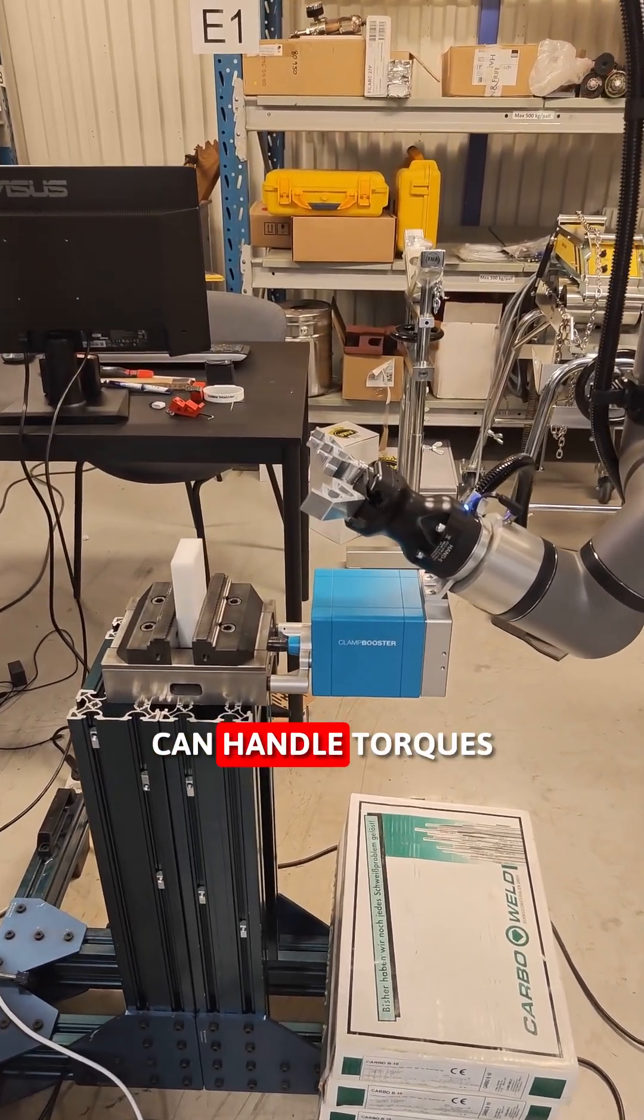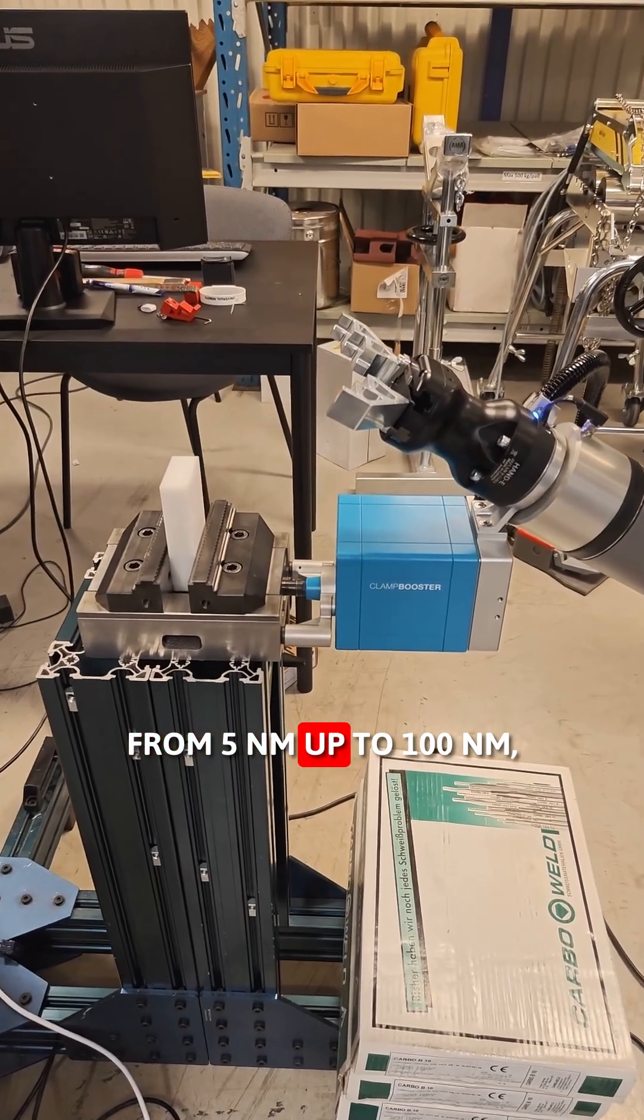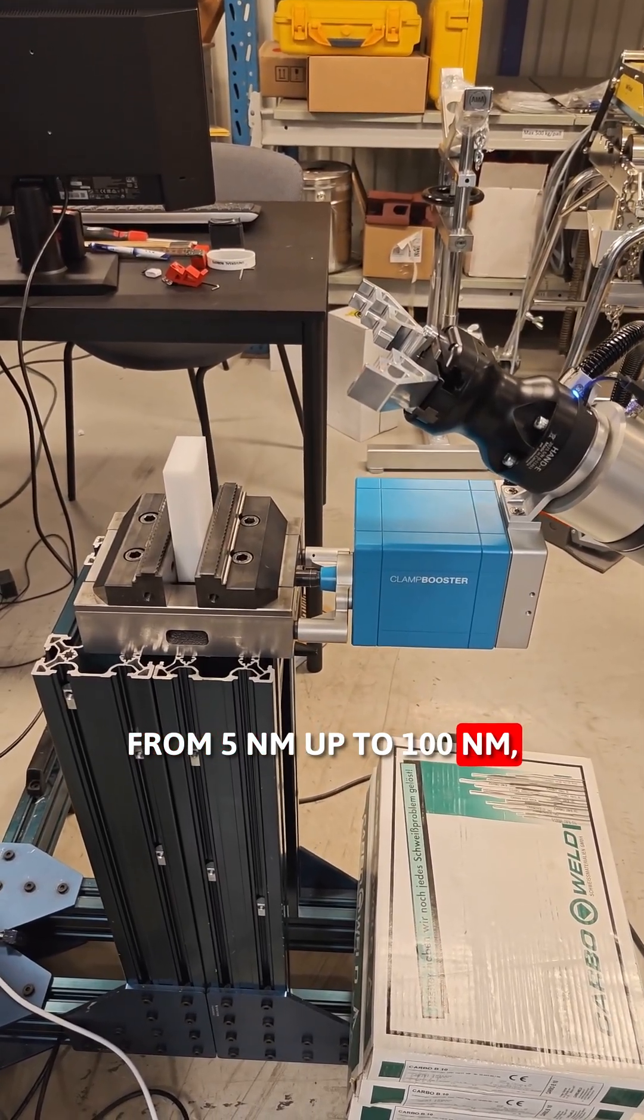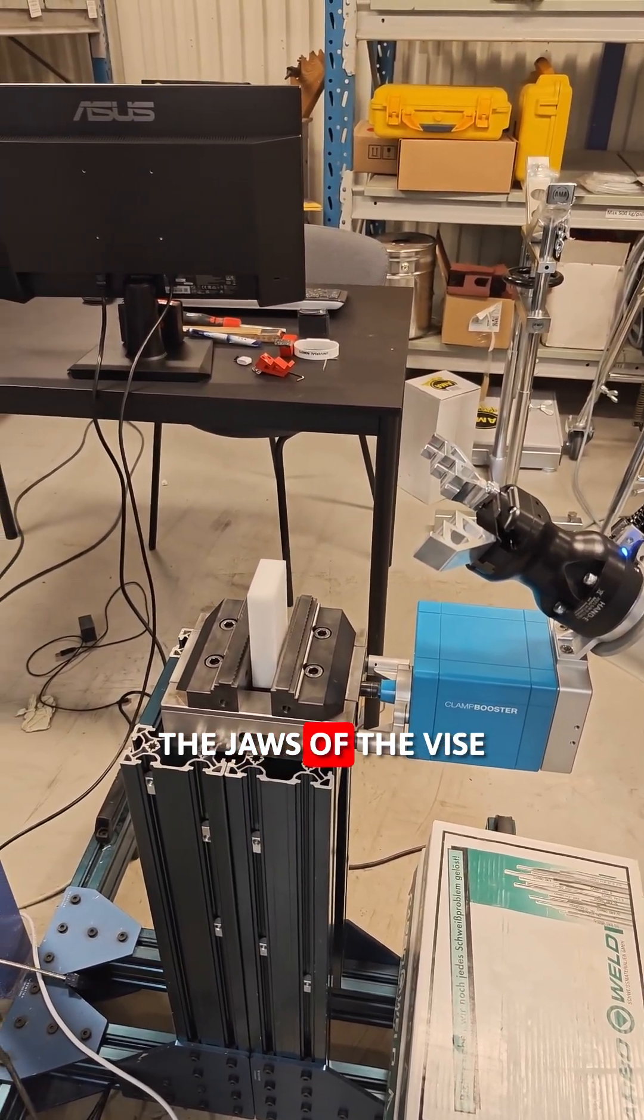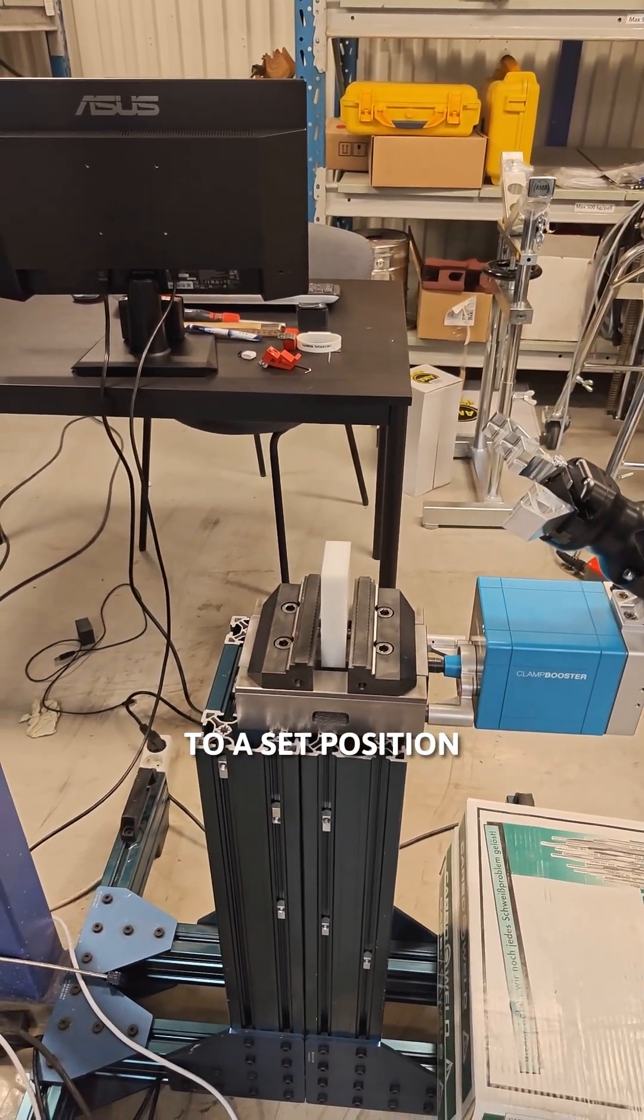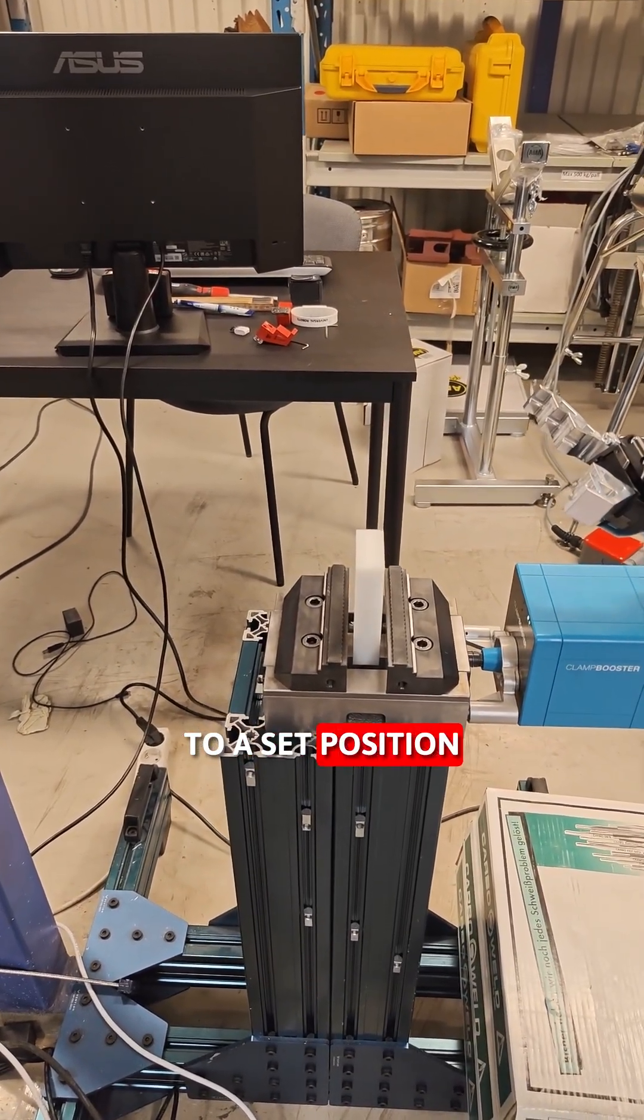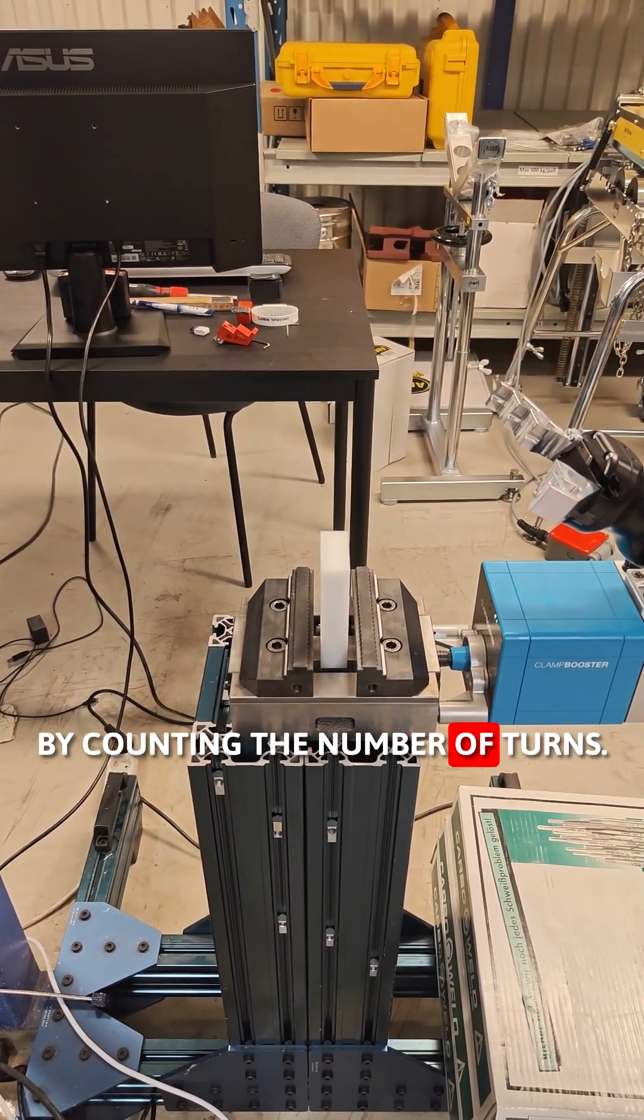The clamp booster can handle torques from 5 newton meters up to 100 newton meters and can also position the jaws of the vise to a set position by counting the number of turns.